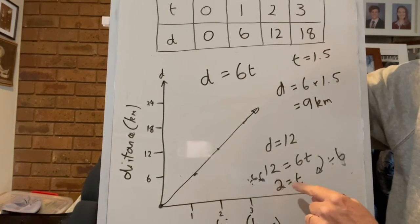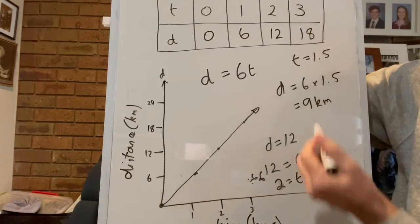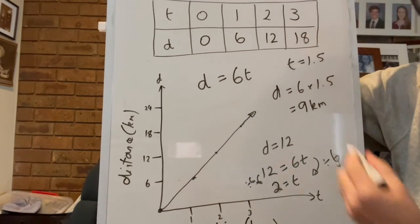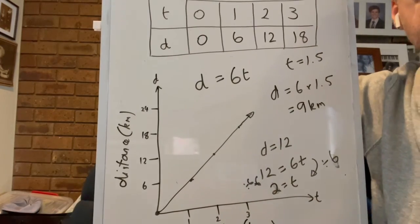Now you could also argue that with that question here you could go back up to your table of values and go well, I already know what that is from the table of values. But the formula proves it as well.